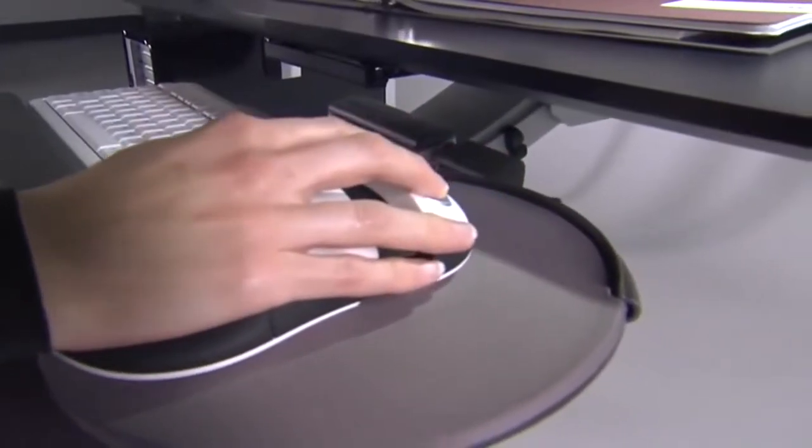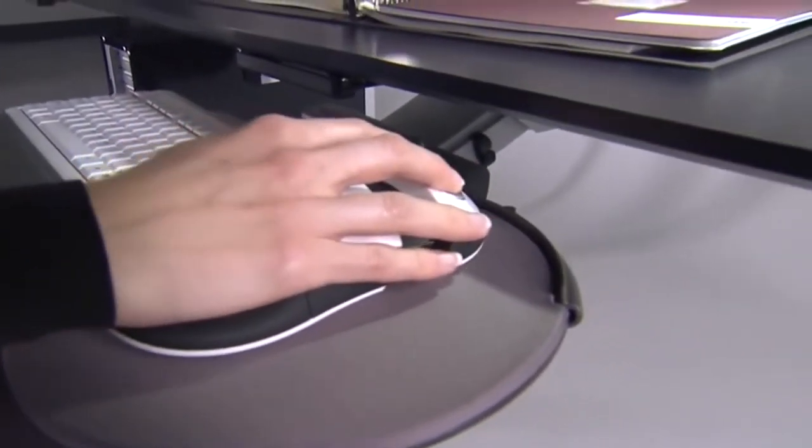So what we want to try and do is get the hand into the most neutral position, which is where the hand is pretty straight and pretty flat. If the palm is supported by the mouse, it almost guarantees that the person's wrist will be in a neutral posture, which is the safest posture you can be in.